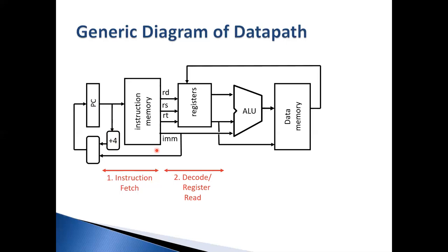Once you have the instruction, the next step is to decode it. You find the opcode to know the format, then partition the instruction into the right fields: rs, rt, rd, shift amount, function code, immediate, or jump target address. Not only do you decode what the instruction does, but you also go to the right registers to grab the values. For example, if rs is s0 and rt is s1, the decode stage goes to those registers and prepares the operands — either two register values or one register value plus one immediate — for the next stage.